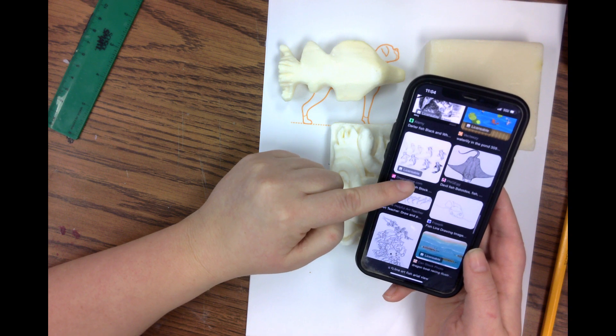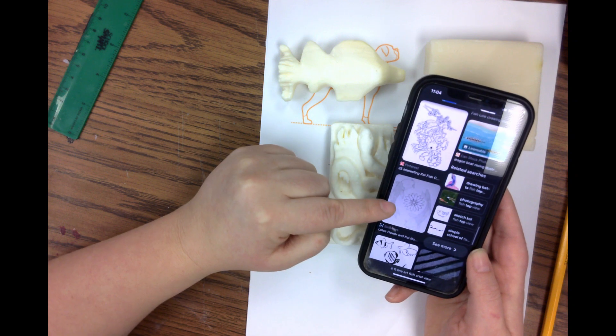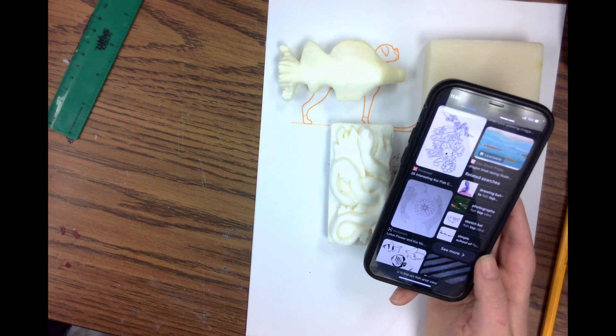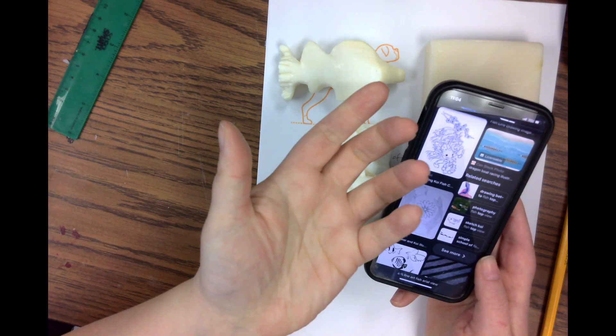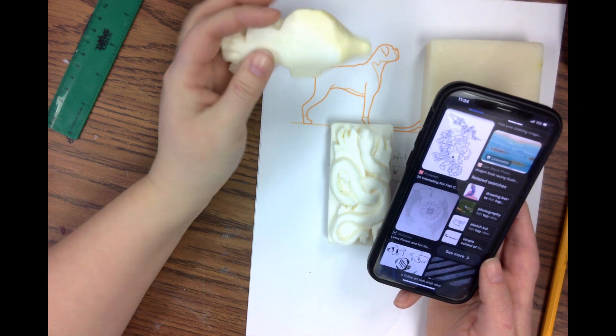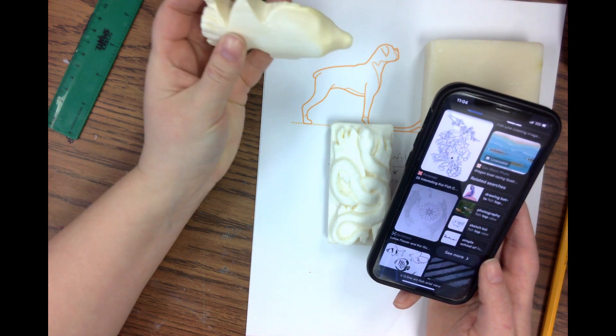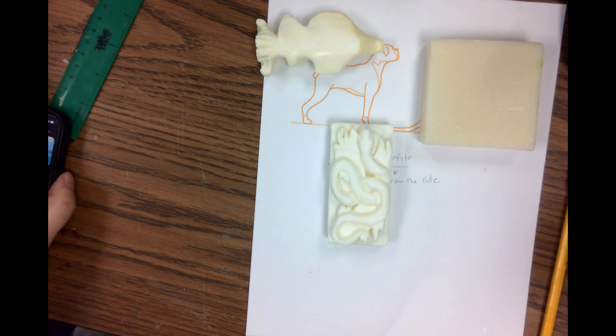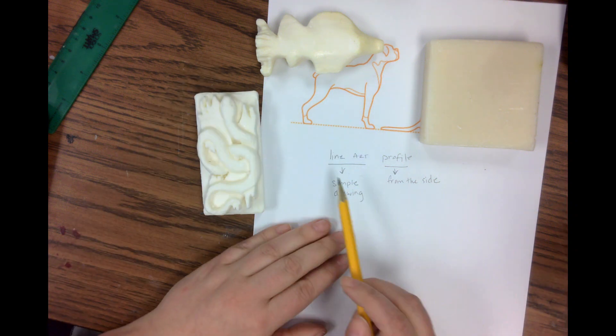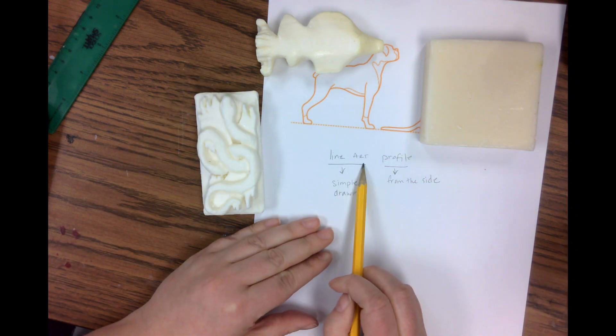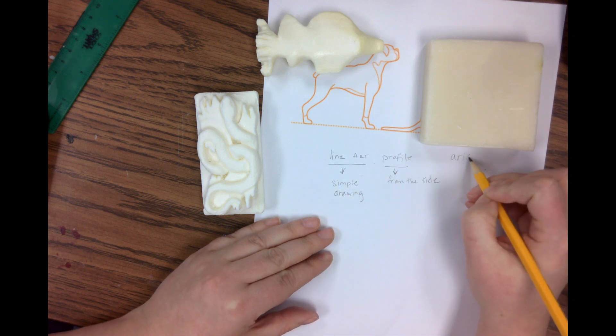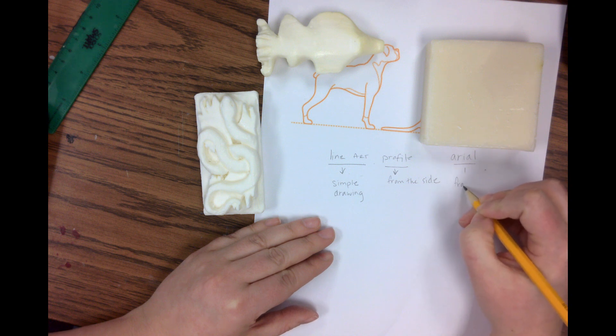So aerial view works fine if you're wanting to do like the top and the bottom of something, and profile works if you want to do the sides of something. So you just kind of have to think about what you're trying to do. So now we understand that's how we're going to find our image. We're going to search line art and then whatever it is in profile or aerial—aerial from above, okay?